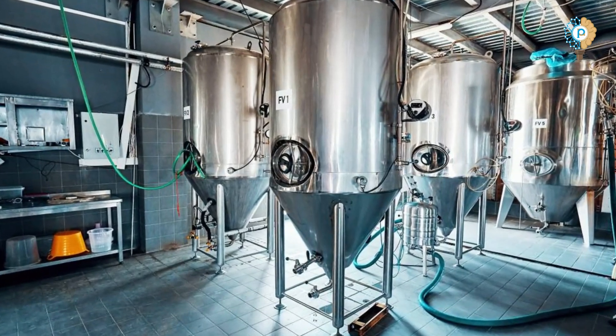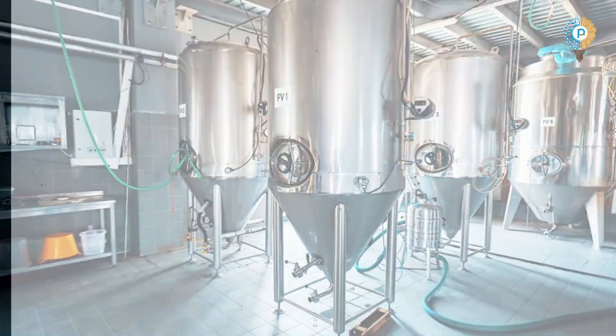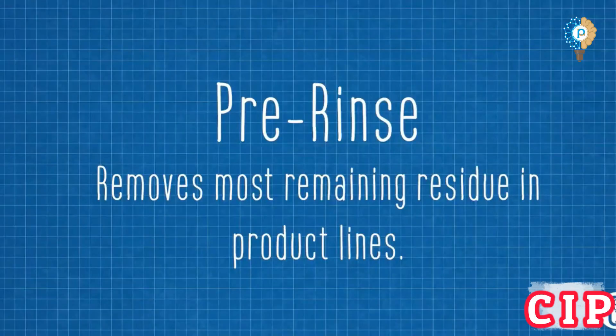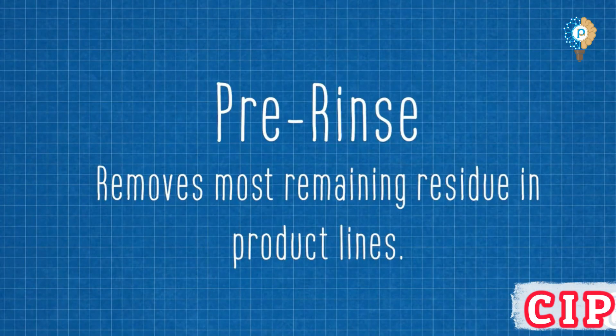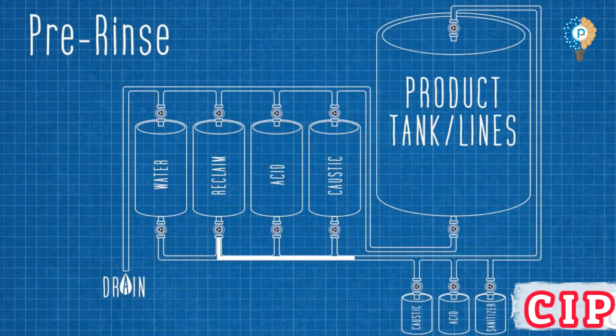Now see the key stages of the CIP process. Step 1: Pre-rinse. Removes large residues using regular or purified water.